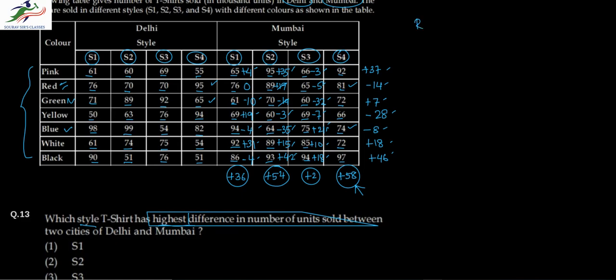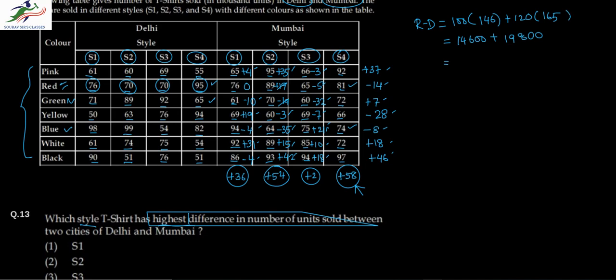For Red Delhi: profit is 100 multiplied by the total of S1 and S2 sales, which is 146, plus 120 multiplied by the total of S3 and S4 sales, which is 165. That equals 14,600 plus 19,800, giving a total of 34,400 for Red Delhi.